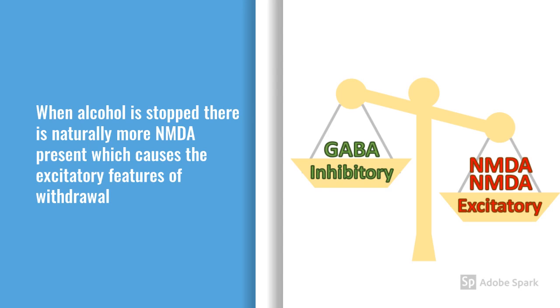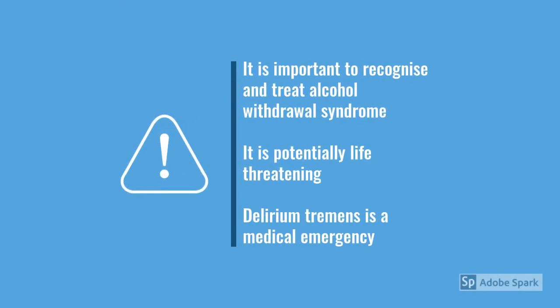You can have quite significant symptoms that a lot of people would probably downplay having not been dependent. There's a bit of nausea and vomiting, but actually these patients can be really unwell. Delirium tremens is a medical emergency. These patients are potentially very sick — seizures are potentially life-threatening. And these patients are often very comorbid, unfortunately, so it's quite a difficult situation to deal with.